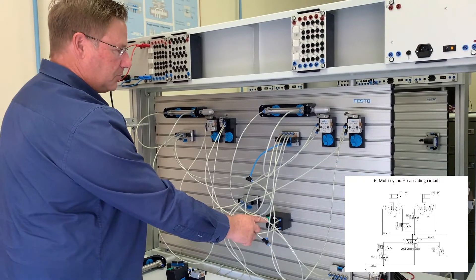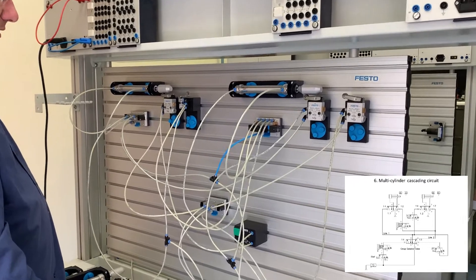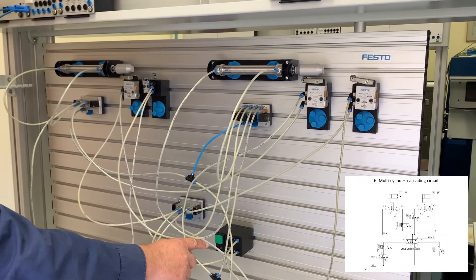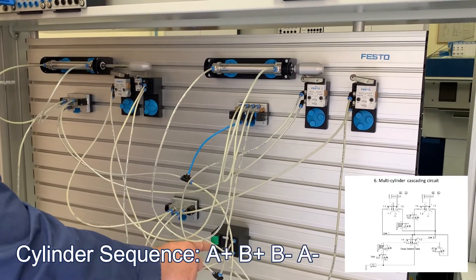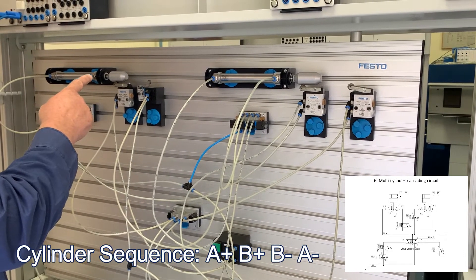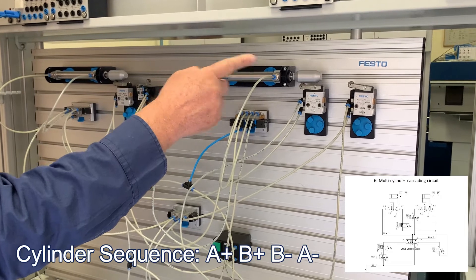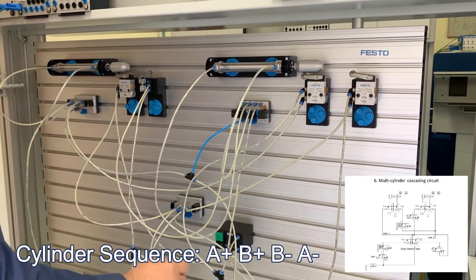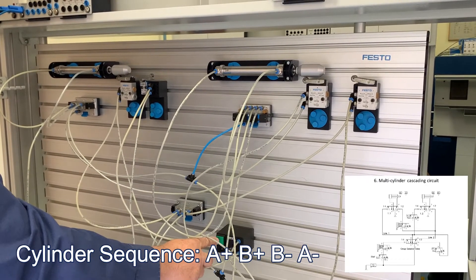So let's see, we push the green button then it works. All right so look carefully at the cylinders. We've got A plus, then we've got B plus, then we've got B minus, and then A minus. Let's do it again.